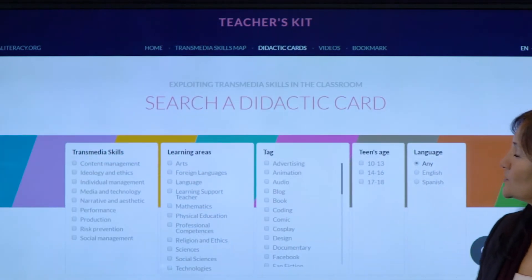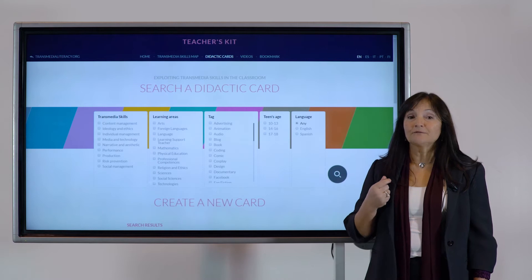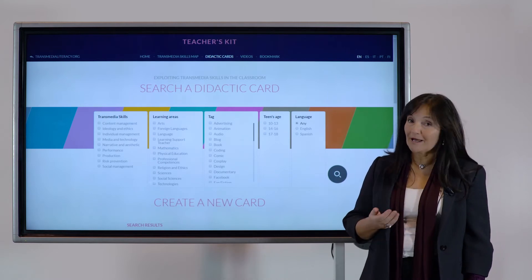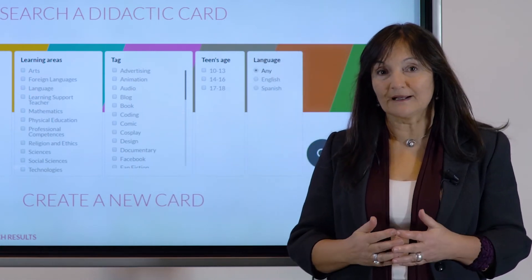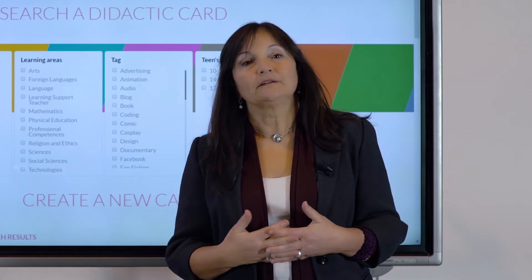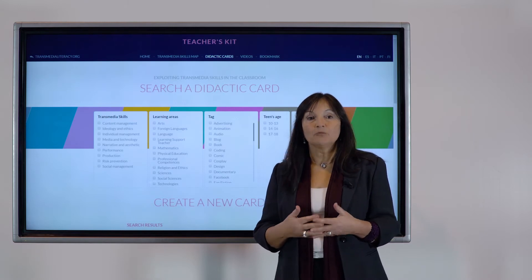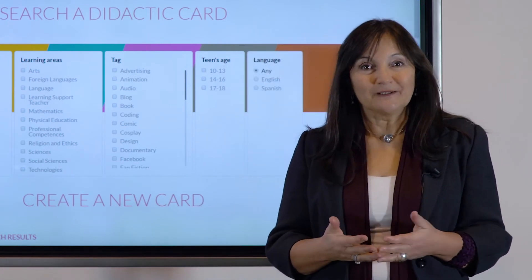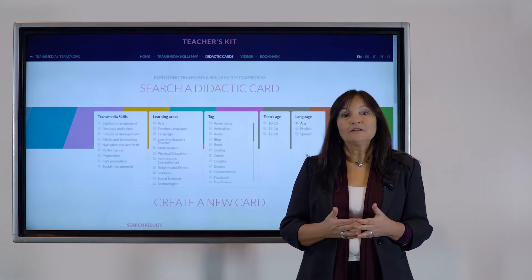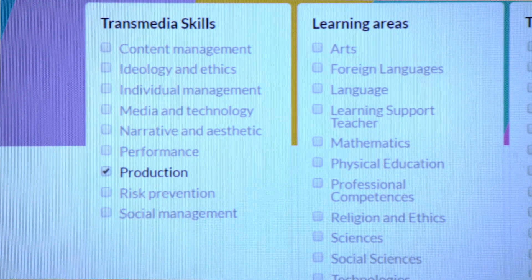In the didactic card section you will also find the search engine. This is a very interesting tool to select the activity or card that best fits with your didactic plan. There are different criteria that you can use to filter the cards. In our opinion, the starting point is to explore and map the teens' transmedia skills most diffused in your classroom. For example, if you find that there are YouTubers who are used to producing videos, the production area will be the most interesting area to start with.